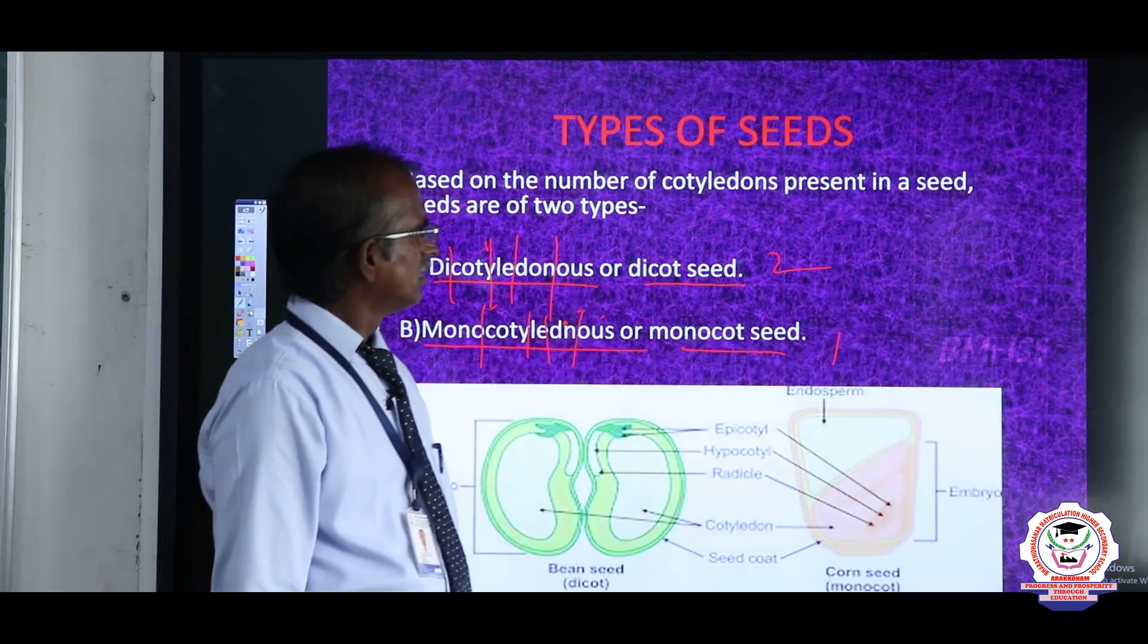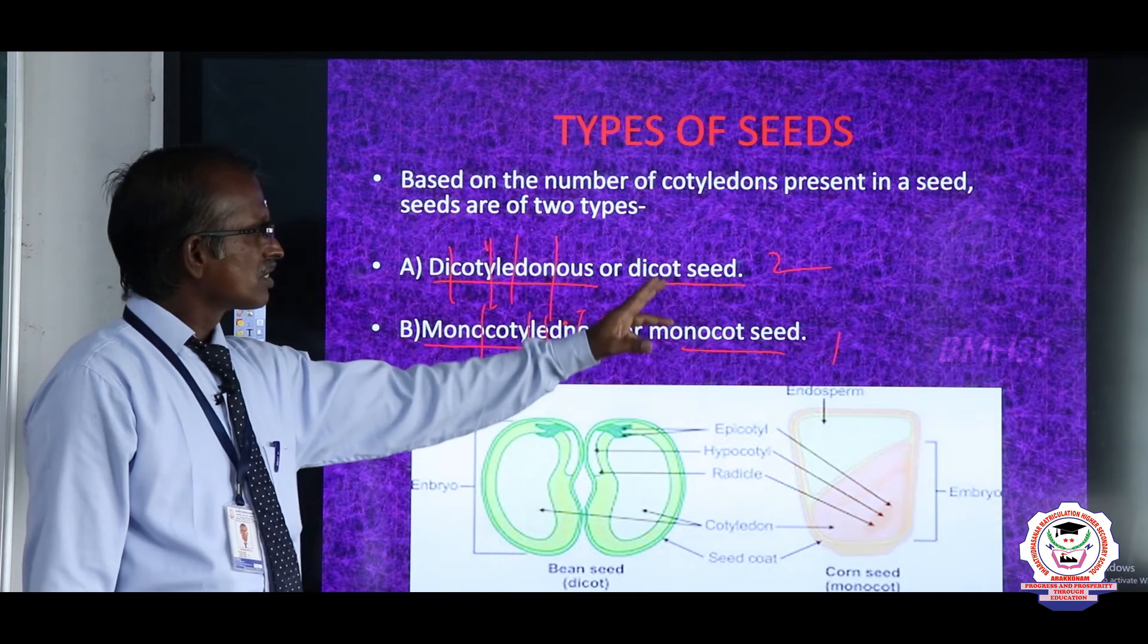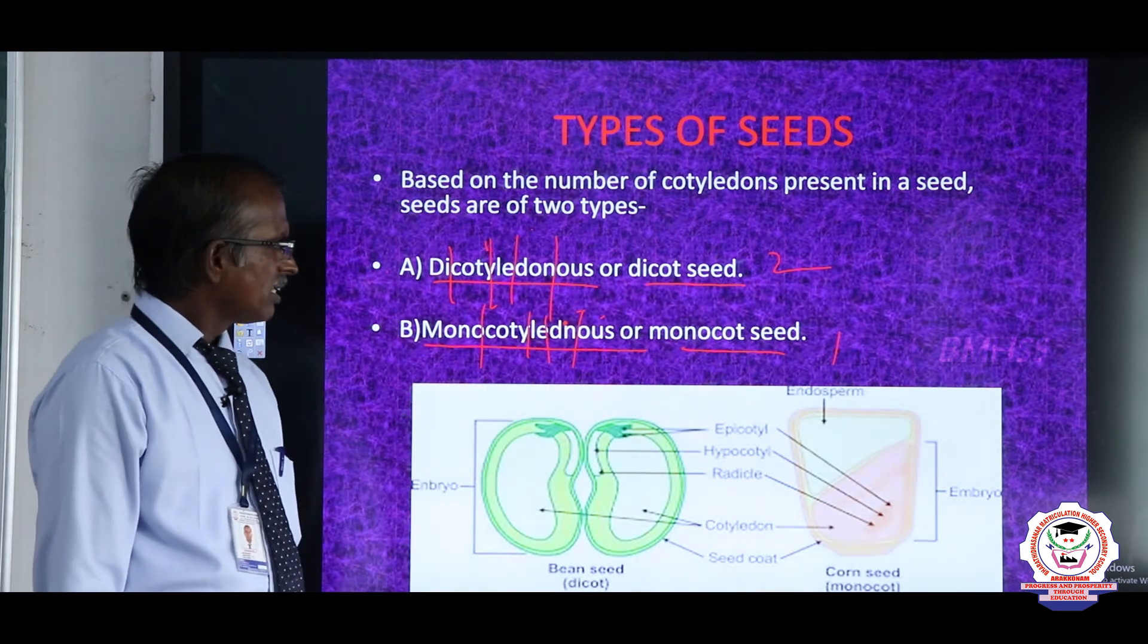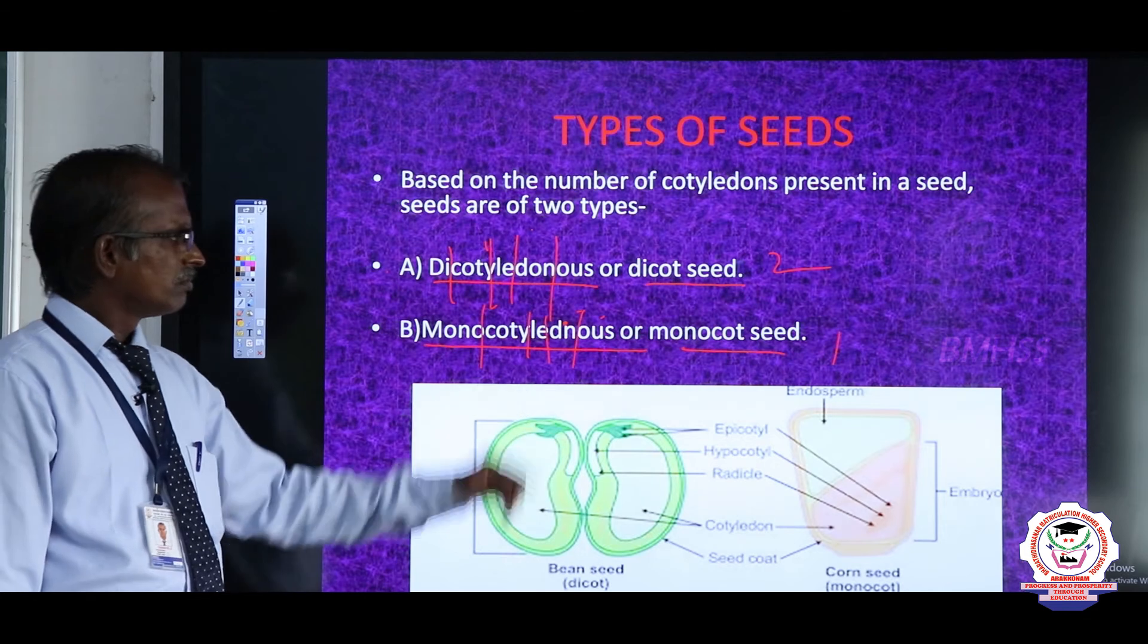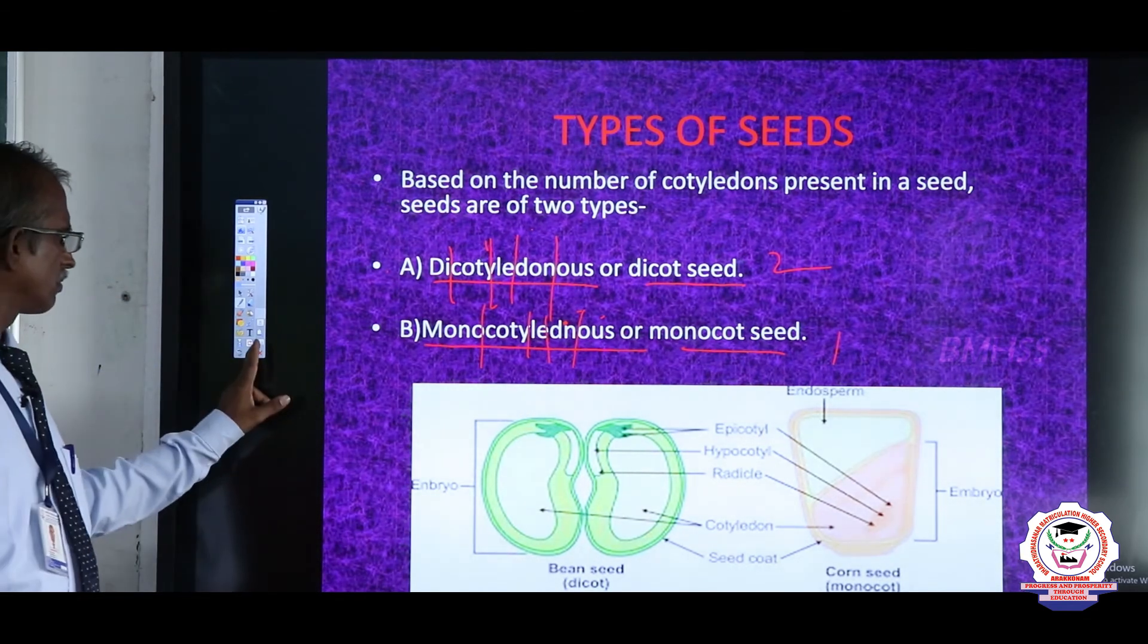Examples: Dicotyledon examples are sunflower and mango. Monocotyledon examples are rice, wheat, and maize.